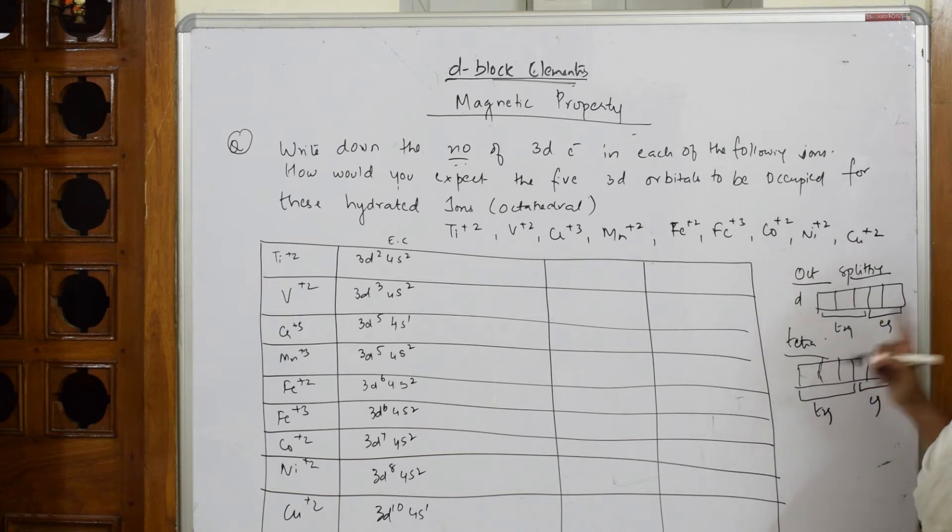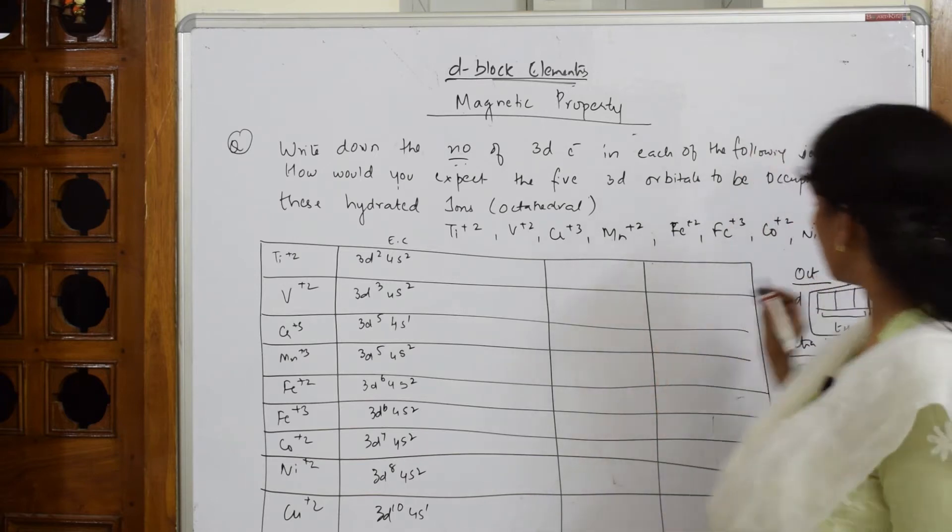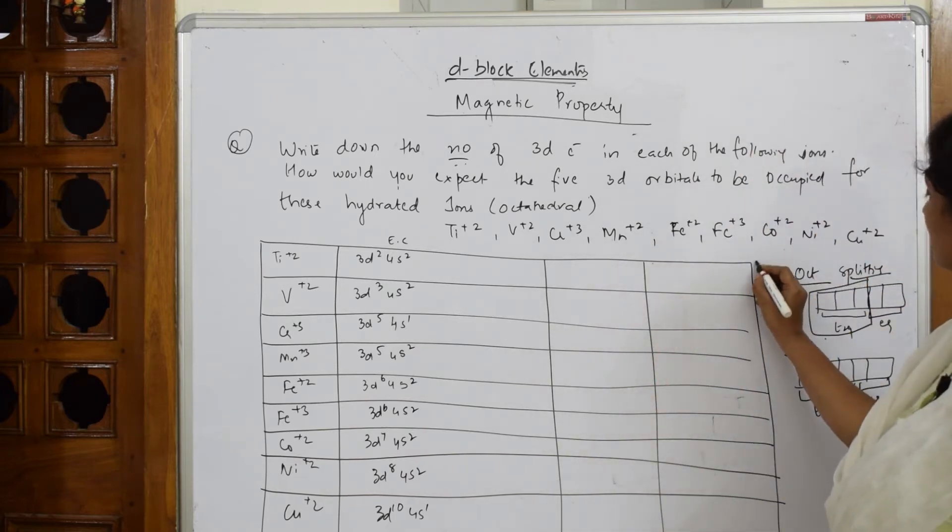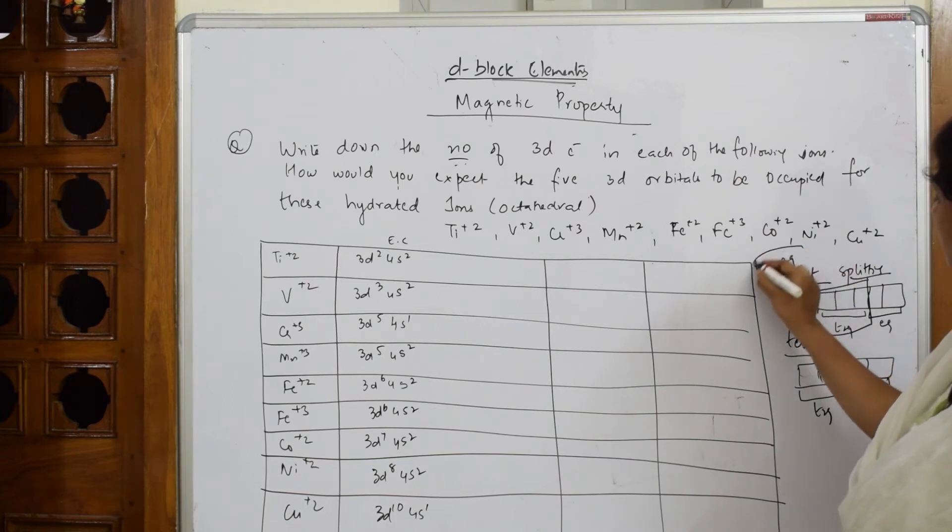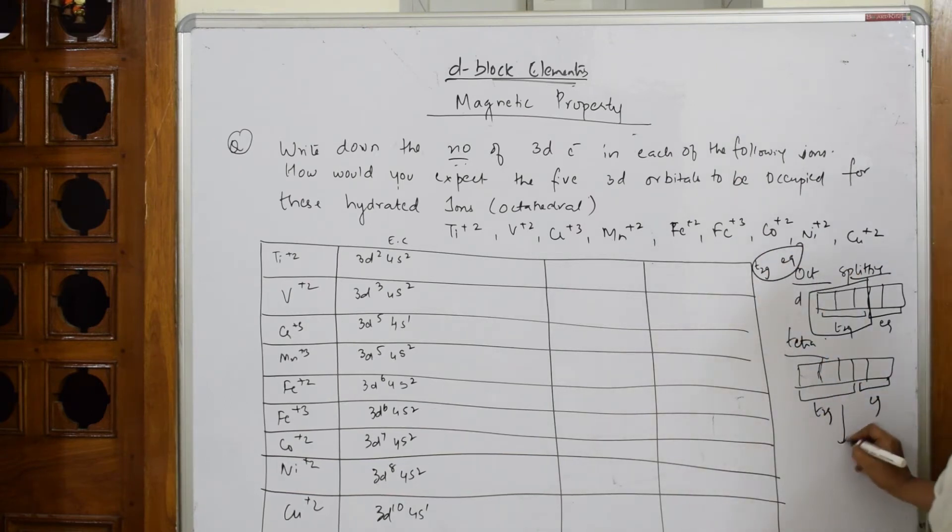When octahedral has to split, remember the splitting. Octahedral first, the lower energy would be T2G set and the higher would be EG set. So the triplet set would be lower energy. That means in octahedral T2G would come first and then comes EG. In tetrahedral EG would be of the lower energy and the T2G would be of the higher energy. The sequence is this. Remember the sequence.